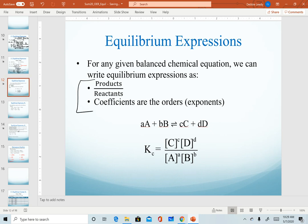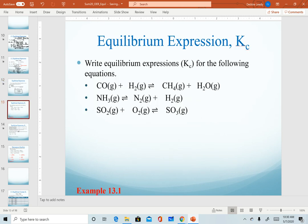The two steps for writing our equilibrium expressions: products over reactants, and the coefficients are the orders or the exponents. So our general notation, if we have this balanced equation of aA + bB = cC + dD, this is our general setup for an equilibrium expression.